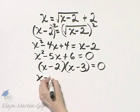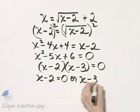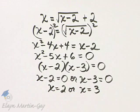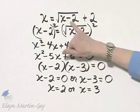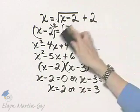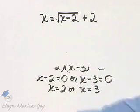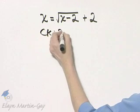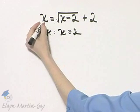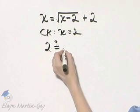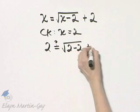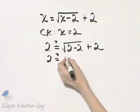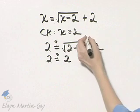Remember we set each factor equal to 0 and solve. Here x is 2, here x is 3. So we have two proposed solutions, and for radical equations those proposed solutions must be checked in the original equation. Let's check x equals 2: everywhere there's x, I write 2. Is 2 equal to the square root of 2 minus 2 plus 2? That's the square root of 0, which is 0, and 0 plus 2 is 2. So 2 checks — it is a solution.